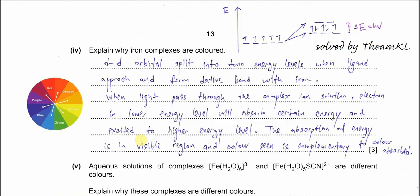Part B4: explain why iron complexes are coloured. There are a few points to cover. First, you need to discuss d-d orbital splitting. Before the ligand approaches, all five d orbitals are degenerate — they are all at the same energy level. When the ligands approach, d-d splitting occurs.